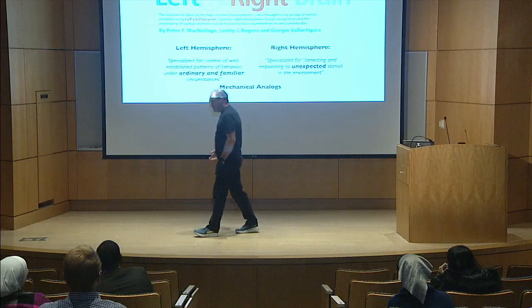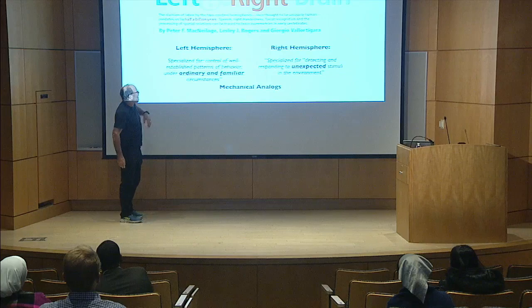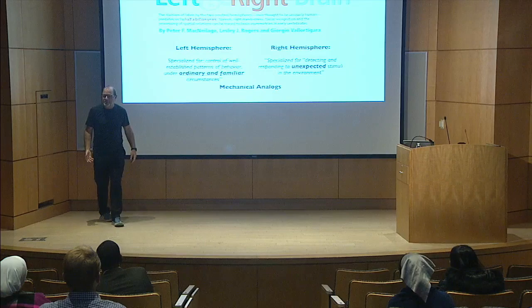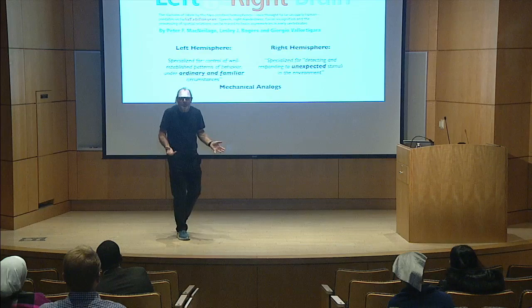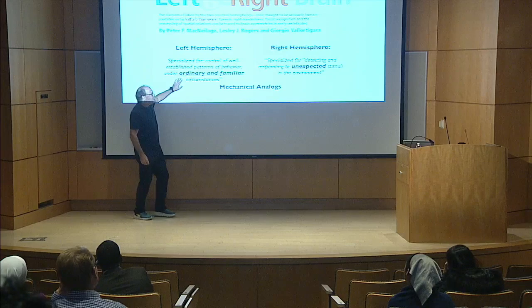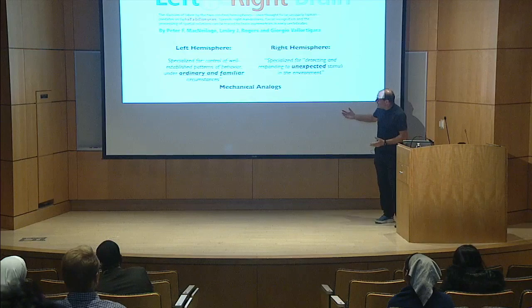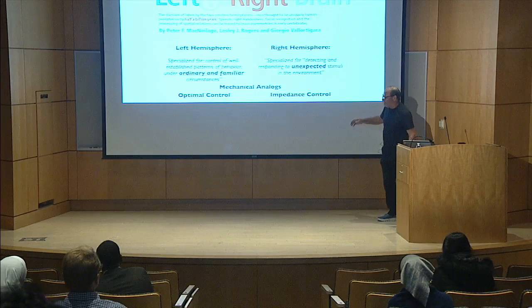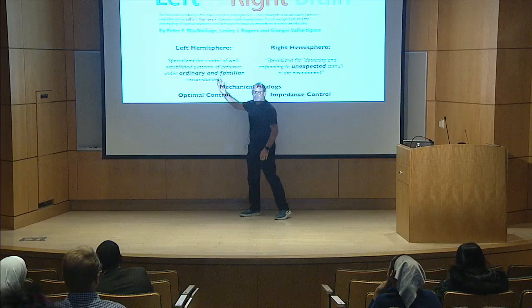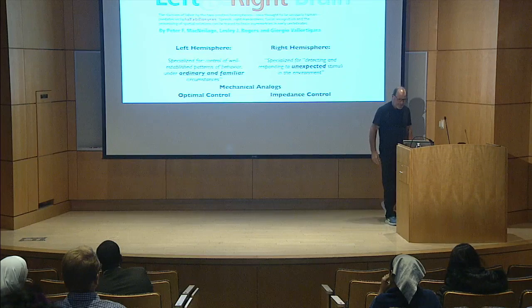Lateralization has occurred throughout the animal kingdom since the beginning of evolution. Leslie Rogers and Peter McNeilage coined the field of comparative vertebrate lateralization. It doesn't fit neatly into left-right, because different species have different things lateralized to different sides. But across the animal kingdom, they found one hemisphere that deals with ordinary and familiar circumstances, and another that deals with unexpected circumstances. Mechanically, you can think of this as: under predictable situations you employ something like optimal control, and when you don't know what's going to happen, you employ impedance control.